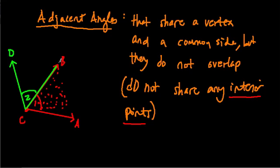Because it shares this common side, this ray right here, B, C. It shares the vertex, and it's right next to it, but it does not cross over the ray. It doesn't share any of the interior points. The interior points of angle two, which I'm going to highlight in green, as you can see, are in a separate area.